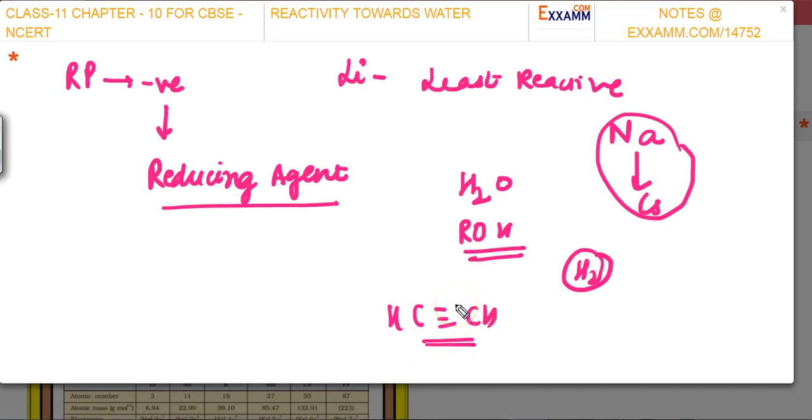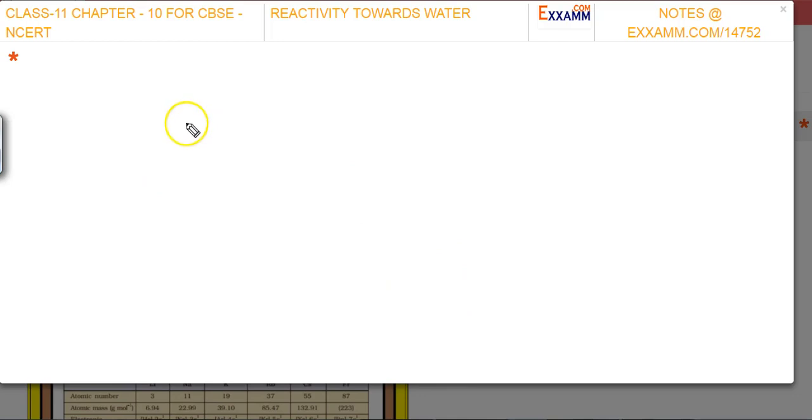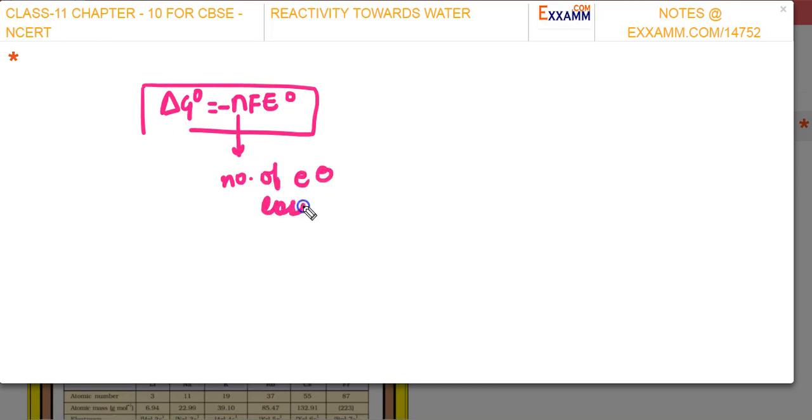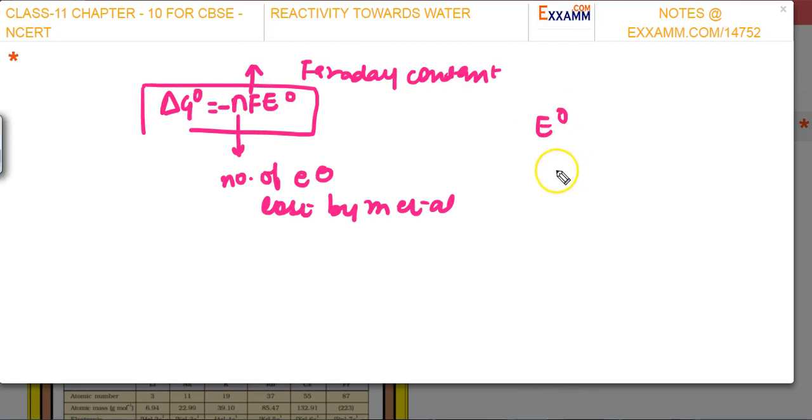Now, what is the reason for lithium's low reactivity? The standard reduction potential and Gibbs free energy have this relation: ΔG° = -nFE°. Here, n is the number of electrons lost by the metal, and F is the Faraday constant. E° for lithium, that is Li+ + e- gives lithium, the reduction potential is -3.04 volts, which is a very negative value.